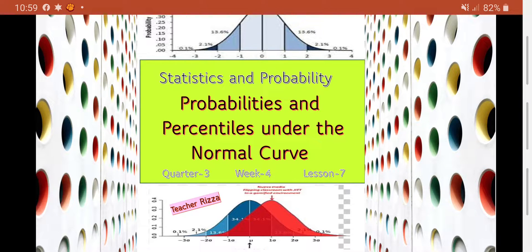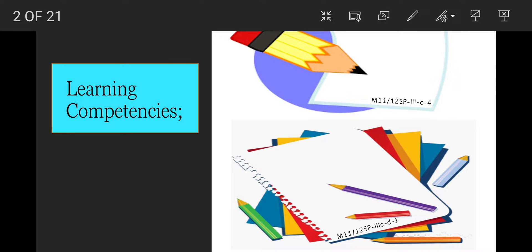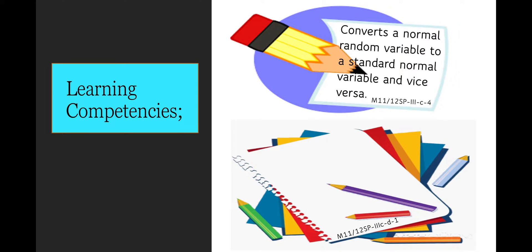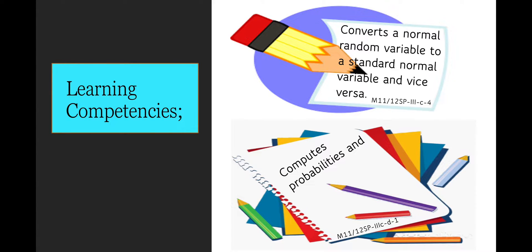Good day! This is our lesson 7 for statistics and probability: probabilities and percentiles under the normal curve. In our learning competencies for this lesson, we will convert a normal random variable to a standard normal variable and vice versa, and compute probabilities and percentiles using the standard normal table.